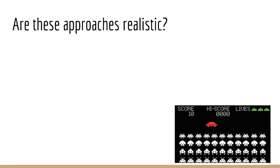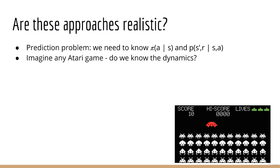Let's consider now why both of these approaches are somewhat unrealistic. First, let's consider the prediction problem. Previously, the solution required us to know both the policy distribution and the environment dynamics. But the reality is, if you imagine, say, any Atari game, we won't know the environment dynamics.